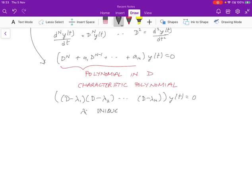Since the left-hand side equals 0, the solutions are going to be (d minus lambda i) yt equals 0. It stands to reason if the product is going to be 0, then each of these must be 0. If you expand this out, this is nothing more than dyt by dt equals lambda i yt.